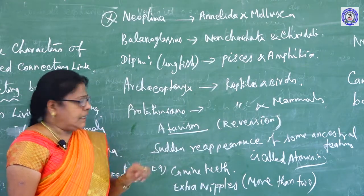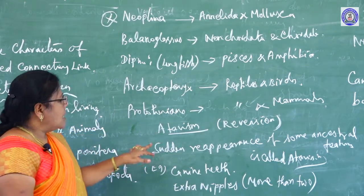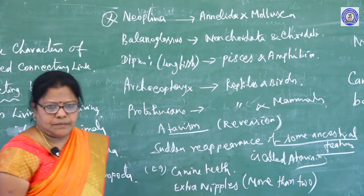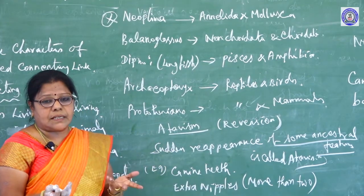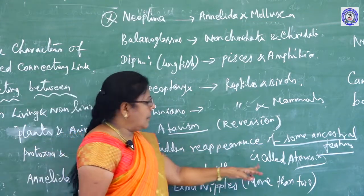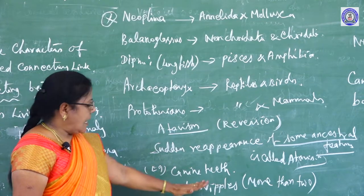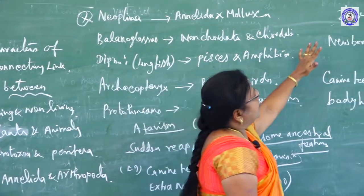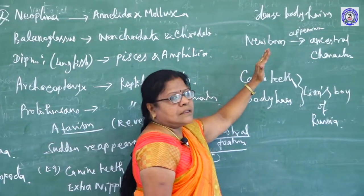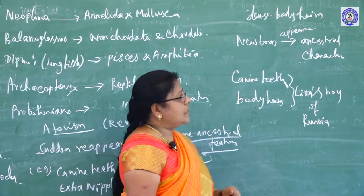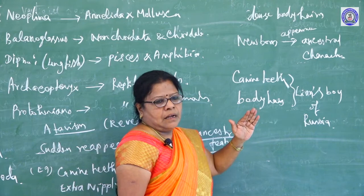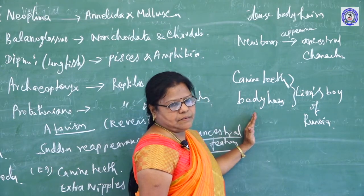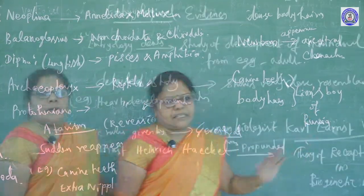The next category: atavism. Sudden reappearance of some ancestral characters or features in an animal is called atavism. Examples: canine teeth, extra nipples (more than two), dense body hair. Some newborn babies are born with ancestral characters, for example canine teeth and body hairs — like the Lion Boy of Russia.